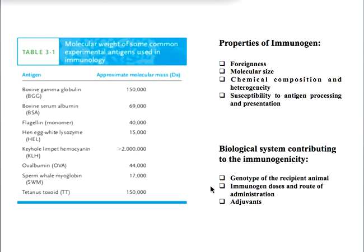Next comes the immunogen dose and route of administration. An insufficient dose of immunogen may not evoke an immune response. The route of administration — whether subcutaneous, intravenous, or another method — will also determine whether the system shows a high immune response or not.